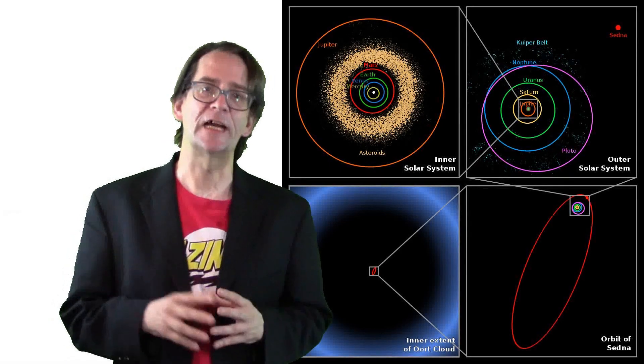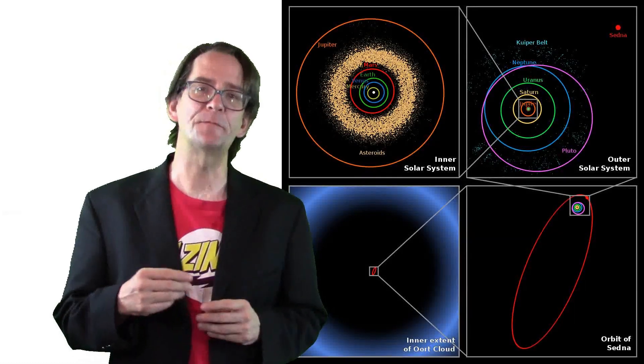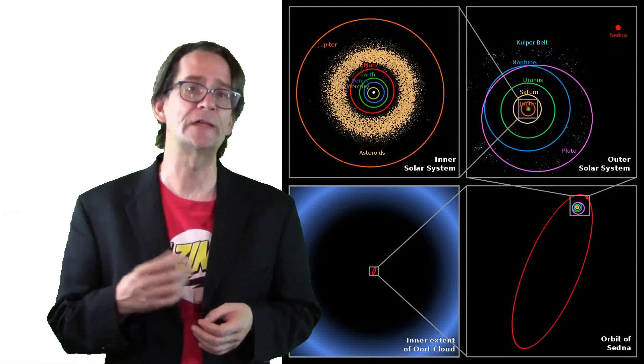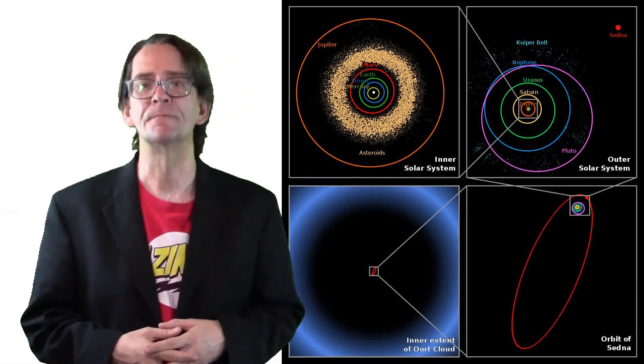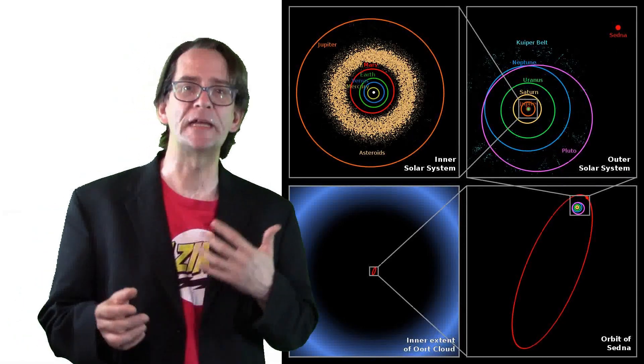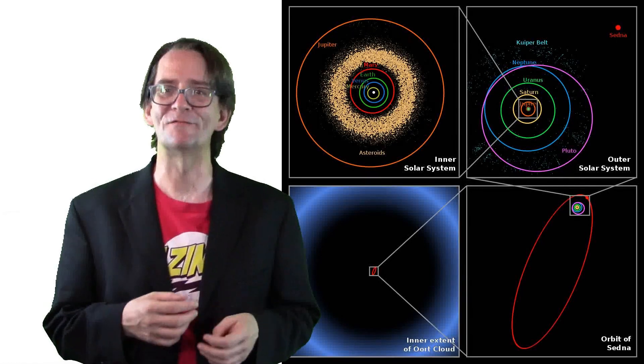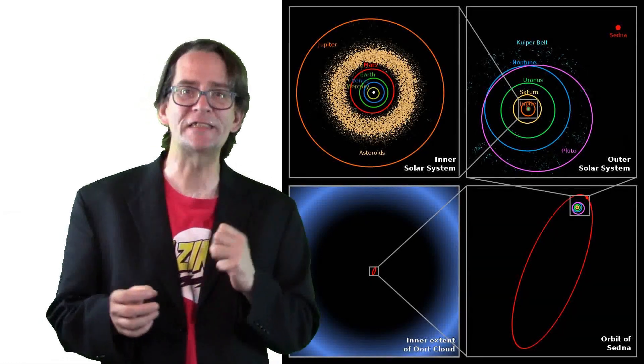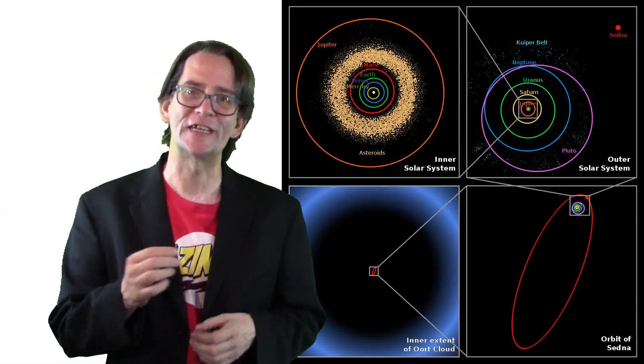Well beyond the Kuiper Belt, the Oort cloud is a diffuse collection of bodies stretching as far as one quarter of the way to the nearest star. This giant spherical shell resembles a big thick-walled bubble made of pieces of icy space debris as large as mountains or even larger. The hypothesized cloud of frozen rock and ice is also thought to be the source of the long-period comets, which can take hundreds or hundreds of thousands of years to complete a single orbit of the sun.